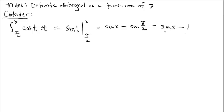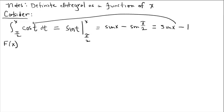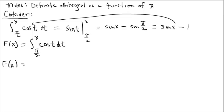Our answer is not numeric like before — it's actually a function. So we can say that this function is defined by this integral. I'm going to use uppercase F, and I can say: consider F of x to be the integral from pi over 2 to x of cosine t dt. Once I do all this work, I can replace the integral with the function that it gives. This answer is defined by this integral. What it allows us to do is quickly accumulate area under the curve of cosine t.